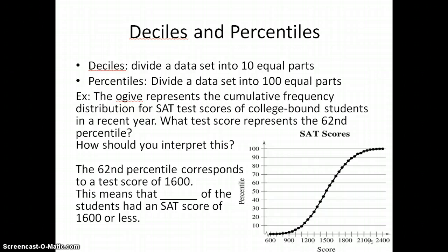Deciles and percentiles are other ways of looking at a similarity as the quartile. A decile would divide it into 10 equal parts instead of 4, and a percentile would divide it into 100.